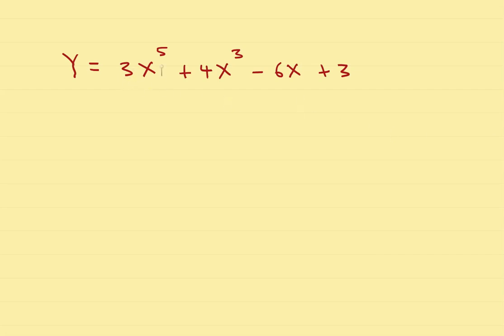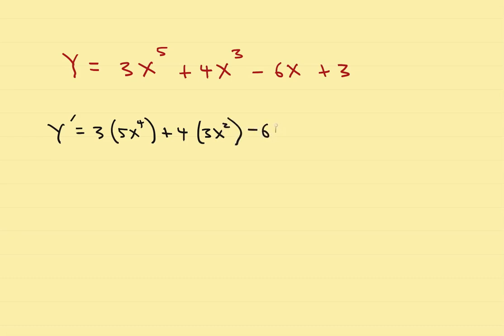If you have a polynomial, you can find the derivative of each term separately. I'll do it in two steps. So y prime equals: the constant 3 times the derivative of the first term gives 5x to the fourth, plus the constant 4 times the derivative of the next term gives 3x squared, then negative 6 times the derivative of x is just 1, leaving negative 6, and the derivative of a constant is 0. The final answer is 15x to the fourth plus 12x squared minus 6.